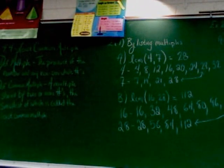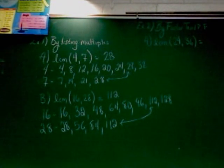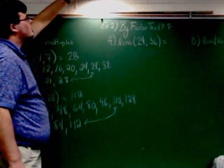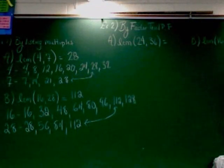In 2A, we're asked to find the least common multiple of 24 and 36. All right, so, we're going to start off with factor trees.